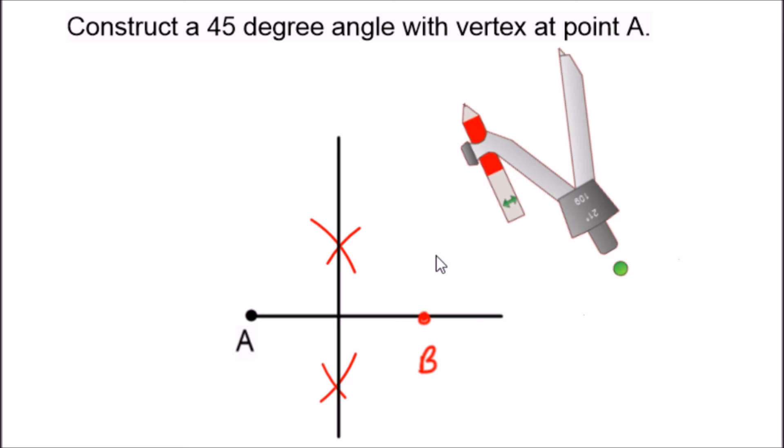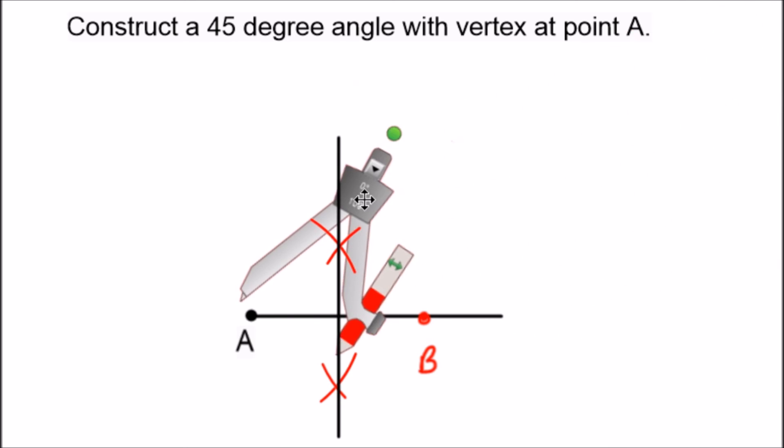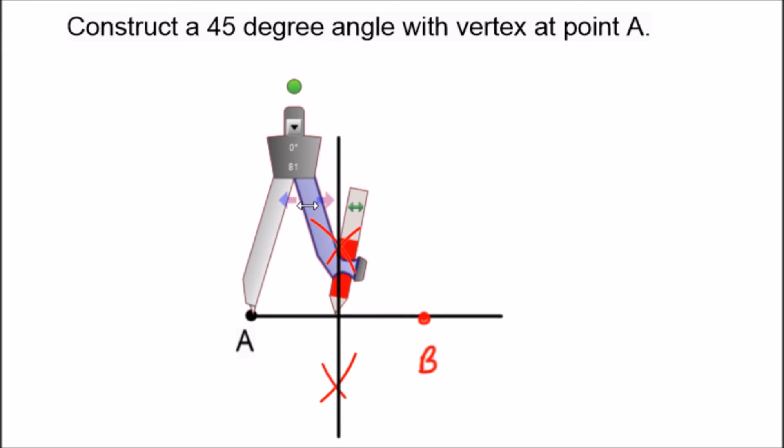Okay now to close this out what we want to do is we're going to use the concept that in an isosceles right triangle the two base angles are 45 degrees.